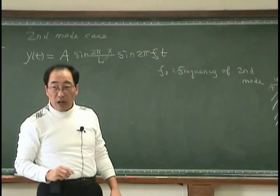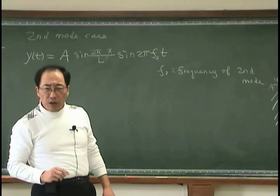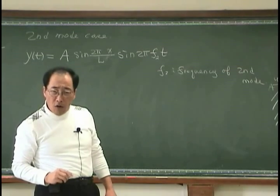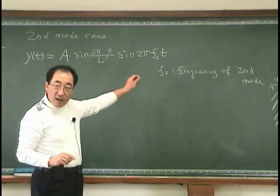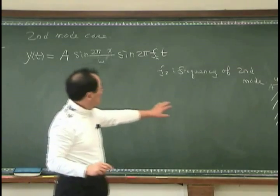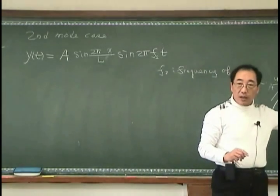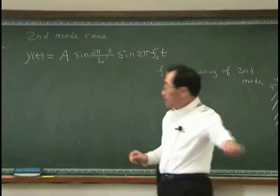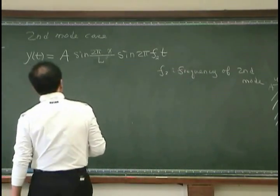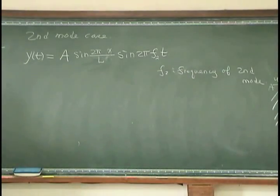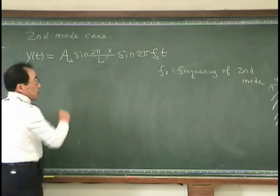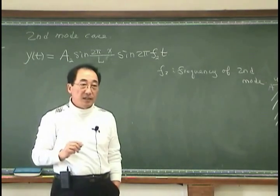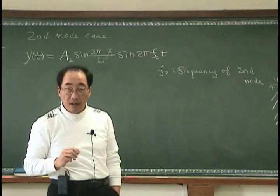Then x equals 3l over 4. Yeah, okay. So that corresponds to our second mode. So we are happy now. And also, I'd like to denote this is a 2 because we are handling second mode.